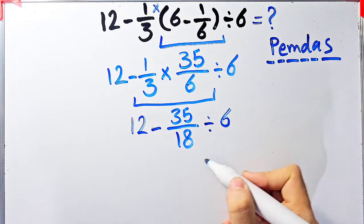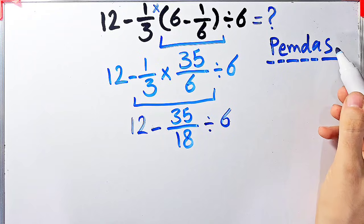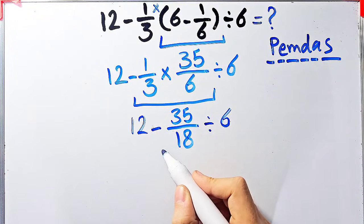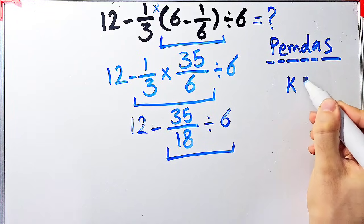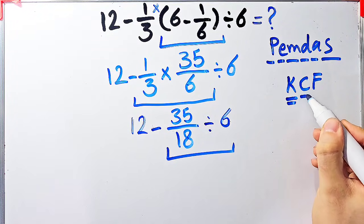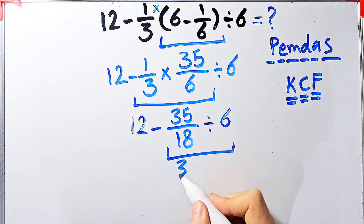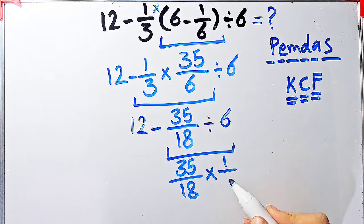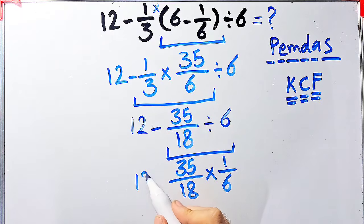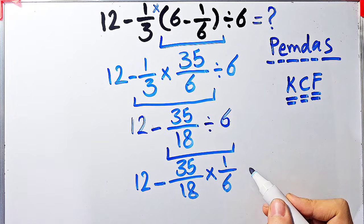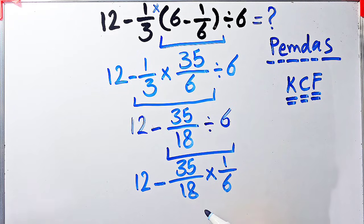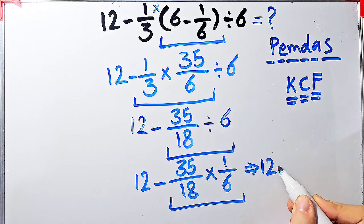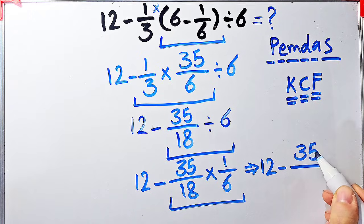Now the question is: 12 minus 35/18 divided by 6. We have subtraction and division — first we do the division because it has higher priority. We have negative 35/18 divided by 6. To solve this we follow the KCF rule: K stands for keep, C stands for change, and F stands for flip. We keep the first fraction, change the sign, and flip the second number. Now we have negative 35/18 times 1/6. Simplifying: 35/18 times 1/6 equals 35/108.